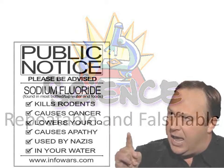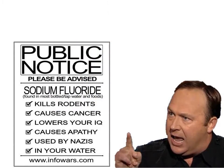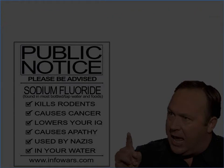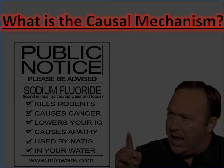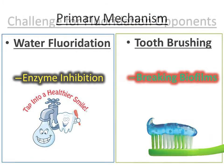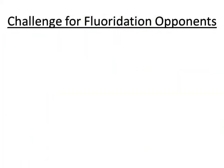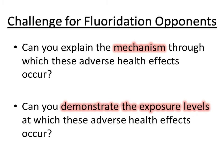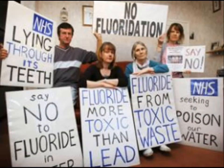If fluoride caused cancer and lowered IQ at exposure levels found in municipal water supplies, then there should damn well be a demonstrable causal mechanism. In this video, we've learned a little bit about the causal mechanism of water fluoridation, and we've established that it's testable. So I have a challenge to any conspiracy theorist who may be watching: can you explain the causal mechanism behind all the adverse health effects you're so concerned about? And furthermore, can you demonstrate the exposure levels at which these terrifying health effects are supposed to occur? Quoting an internet documentary is not evidence — it's nonsense.